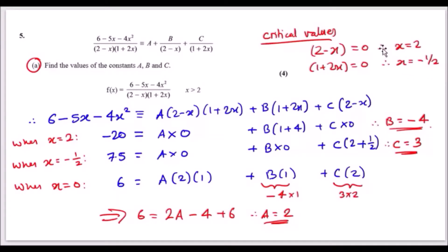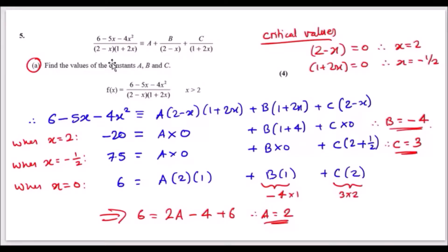To solve this, the first thing you want to do is multiply everything by (2 minus x) and (1 plus 2x). On the left-hand side, the denominator disappears. On the right-hand side, A gets both terms, B cancels out (2 minus x) and keeps (1 plus 2x), and C cancels out (1 plus 2x) and keeps (2 minus x). This is because once you test values, you can easily find the coefficients a, b, and c.